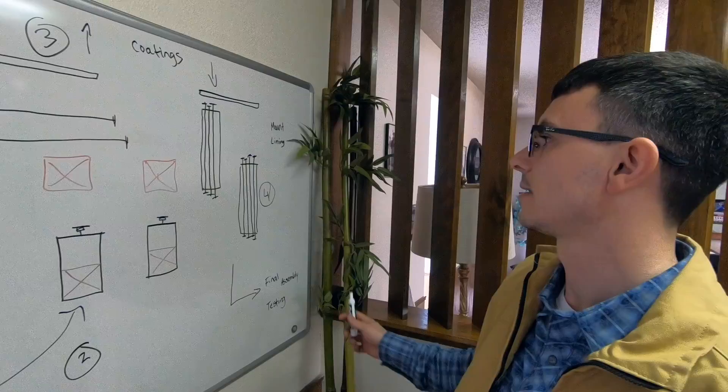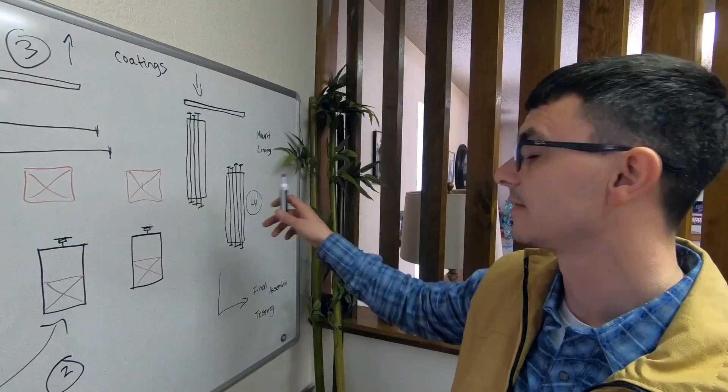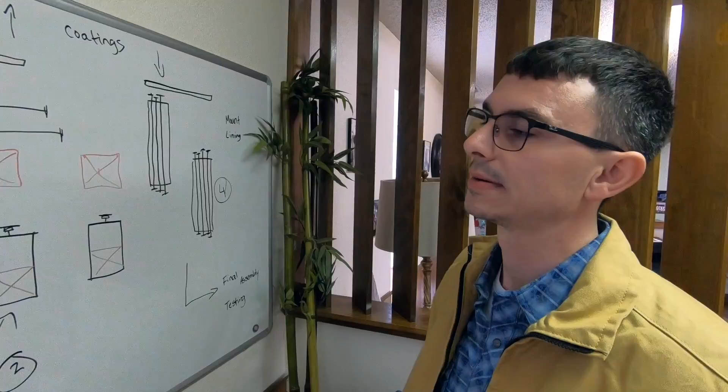But we do it in a way that doesn't create a bunch of extra work. So sometimes we'll have templates, jigs, different things to kind of help with that process. But we integrate it into the process so that it's getting checked multiple times. And the result is that we don't send anything out of our shop that isn't perfectly to tolerance or the right length.